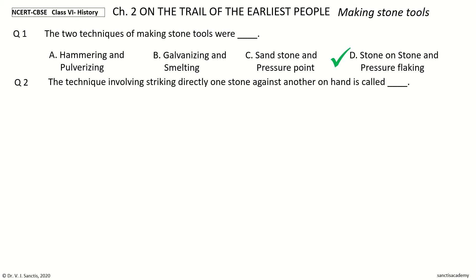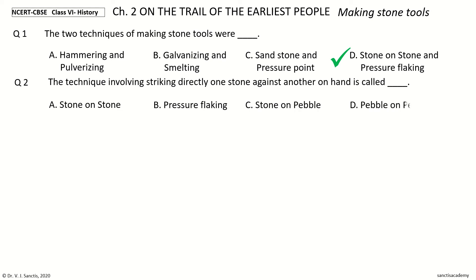The options are: stone on stone, pressure flaking, stone on pebble, pebble on pebble. And the answer is stone on stone.